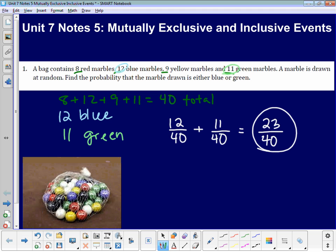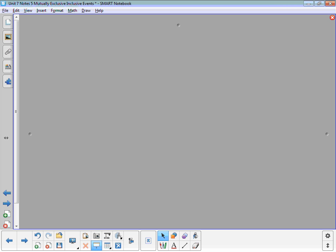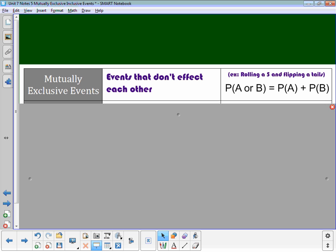Now, thinking about blue and green marbles, assuming all our marbles are just one color, that means a marble can't be blue and green at the same time. So that means they are mutually exclusive.